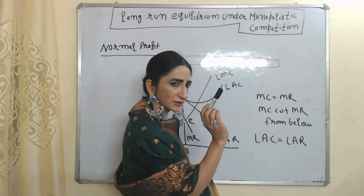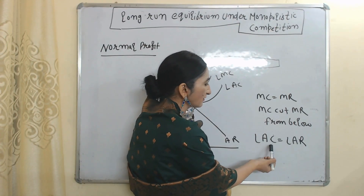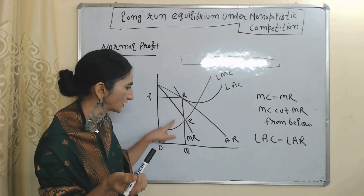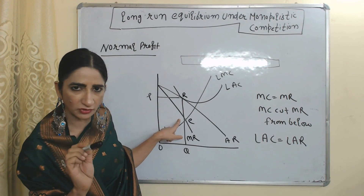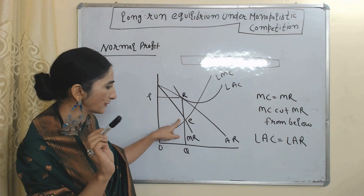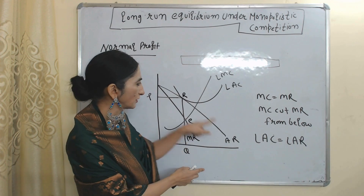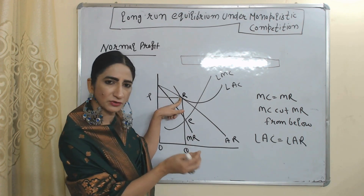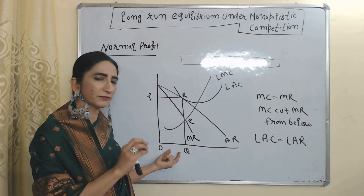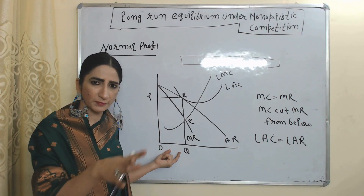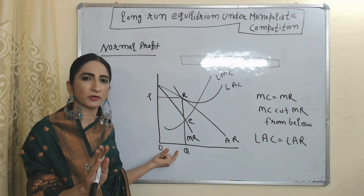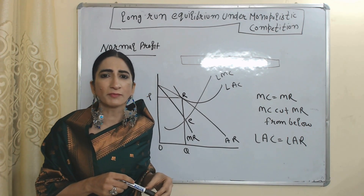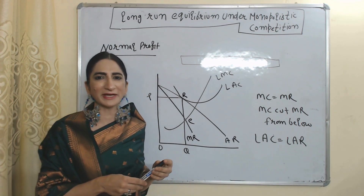The conditions of long run normal profit are: marginal cost equals marginal revenue; marginal cost cuts marginal revenue from below; and long run average cost equals long run average revenue. RQ is our average revenue and RQ is also our average cost, meaning average cost is equal to average revenue. At OQ amount of output all conditions of normal profit are satisfied, so we can say the firm receives normal profit in the long run. This is all about monopolistic competition — thank you so much for watching.